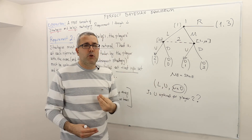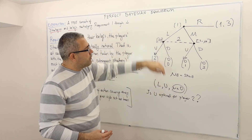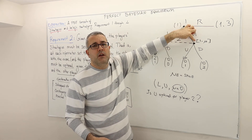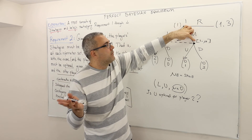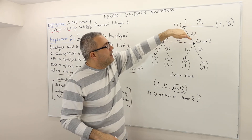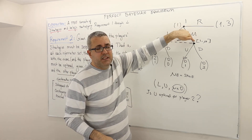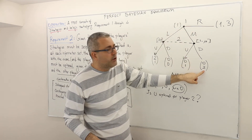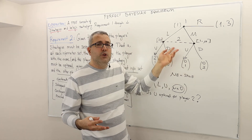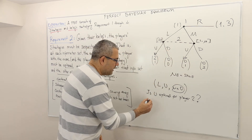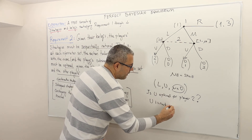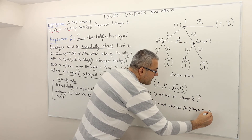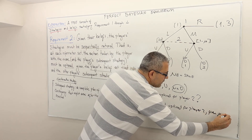She's holding a belief mu equals zero. So, is she best responding to this belief? Mu equals zero means she thinks she is, in fact, at this particular decision node. She's holding a wrong belief, but if she believes that is the decision node she's at, U is going to bring her a payoff of one, D is going to bring her a payoff of two, and clearly U is not optimal given mu equals zero.